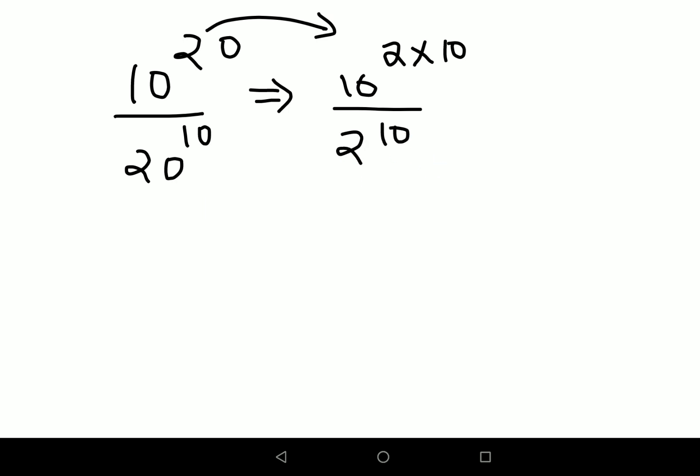to m, the whole raised to n. So this will now look like 10 raised to 2, the whole raised to 10. I'm trying to put everything under the same index.